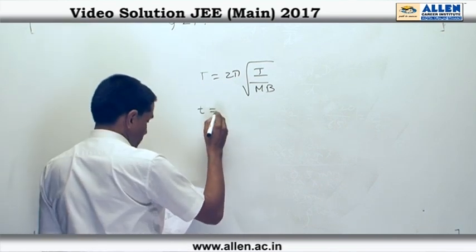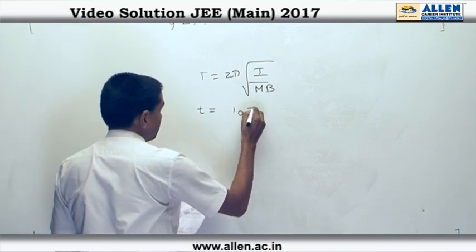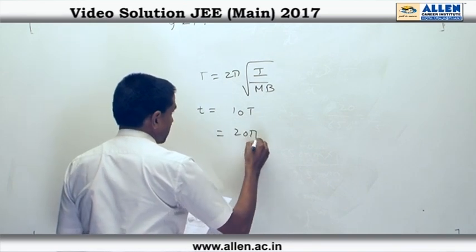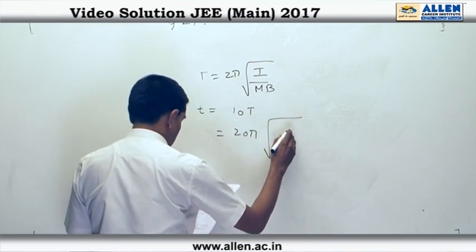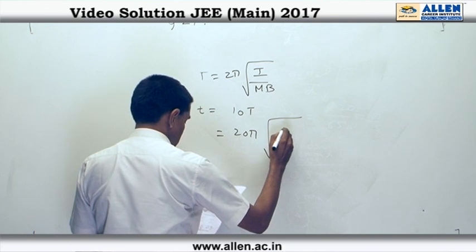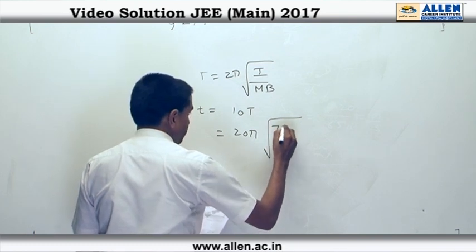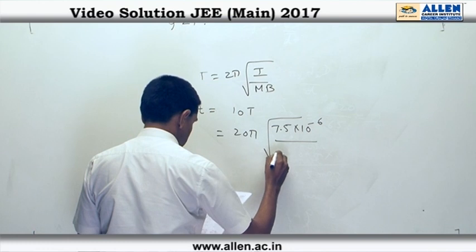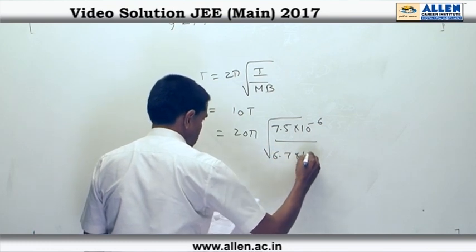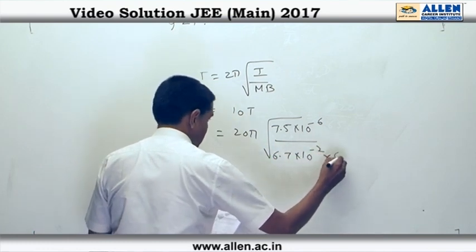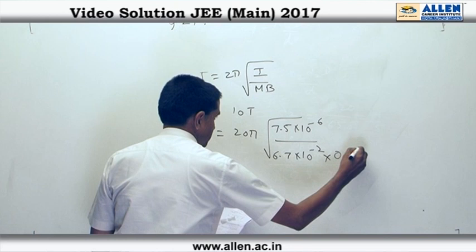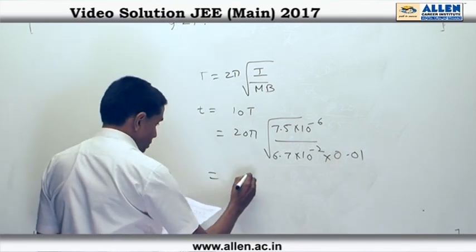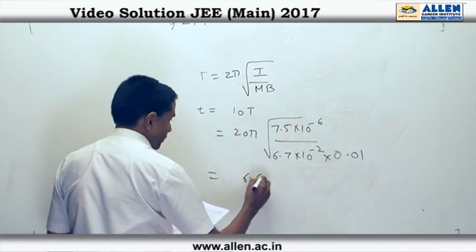Time taken for 10 oscillations will be equal to 10 multiplied by T, which is 20π into root of I. I is 7.5 × 10⁻⁶, upon m = 6.7 × 10⁻², multiplied by B = 0.01 tesla. That makes this to be 6.65 seconds.